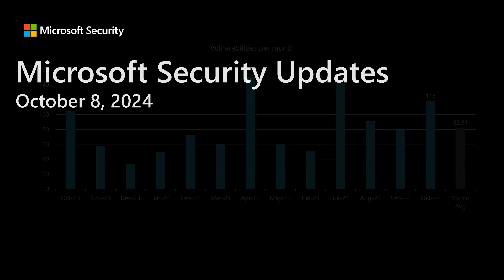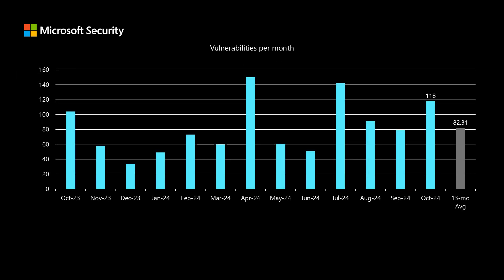Please note that the details of the vulnerabilities covered in this video may change, and the authoritative location for information will always be the online content in the Security Update Guide. Before I dig into today's release, I like to compare it to the previous 12 months to see how it stacks up. We have 118 newly disclosed vulnerabilities in today's release, which is a little bit higher than an average of just over 82 per month.